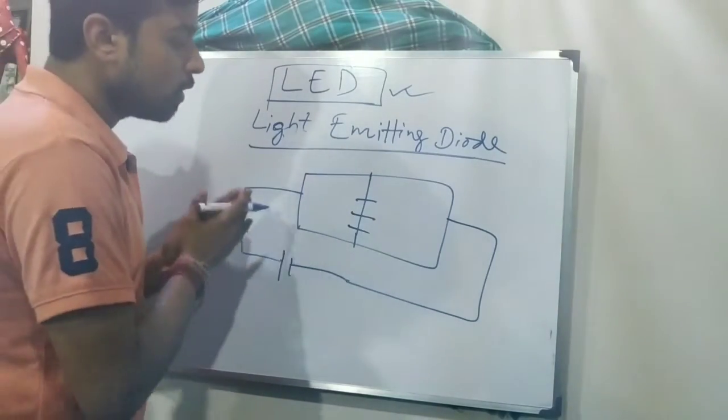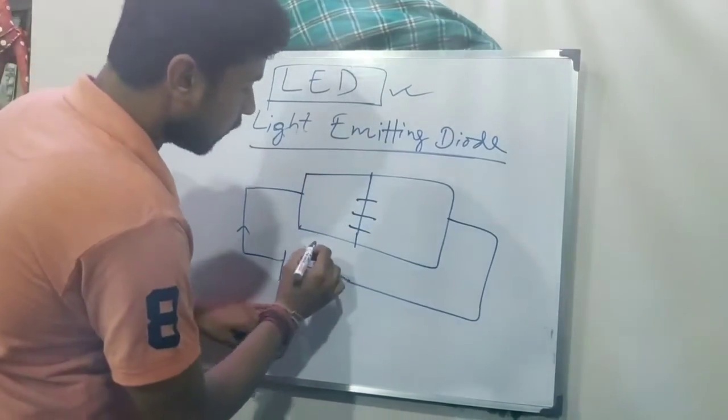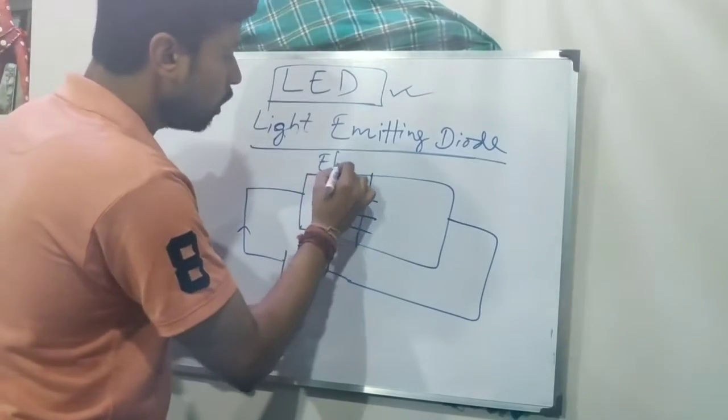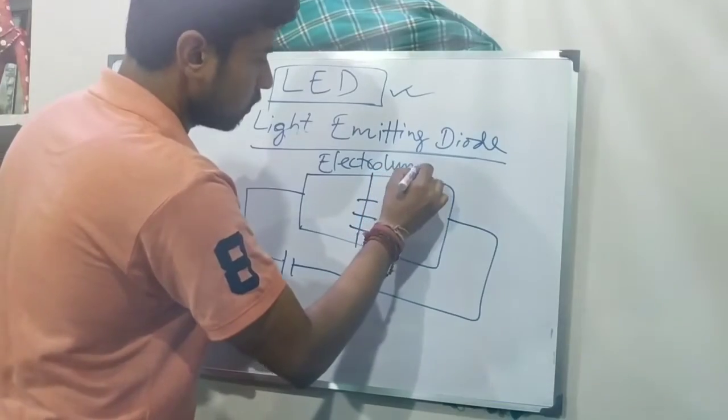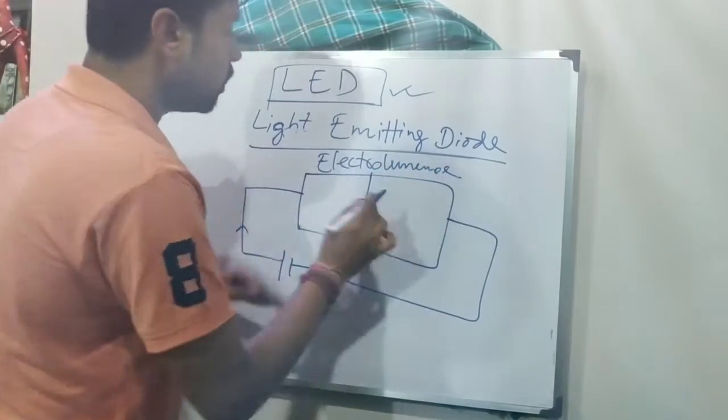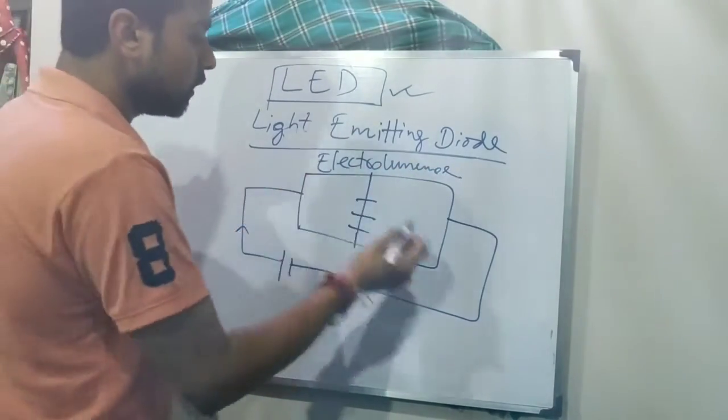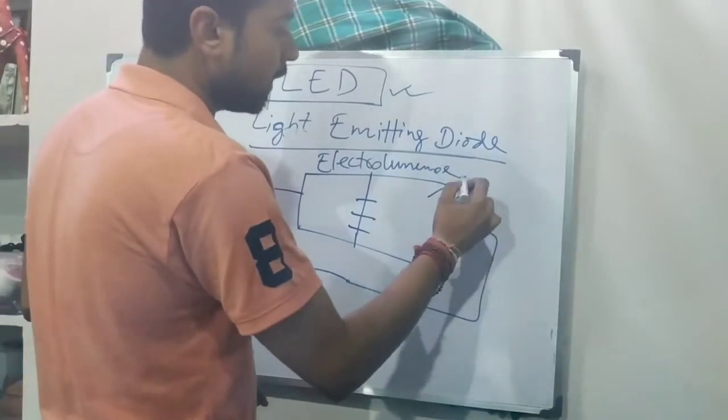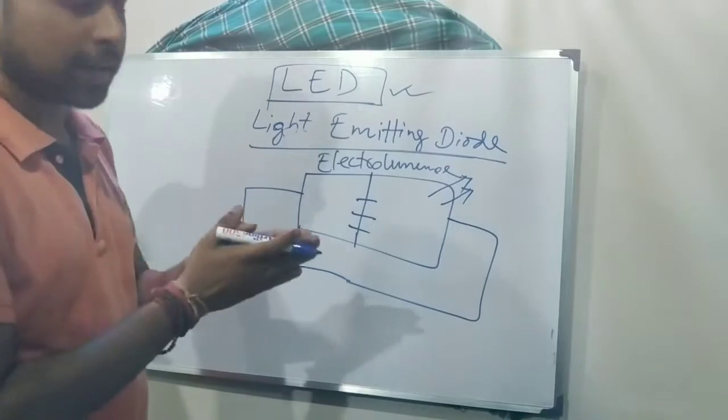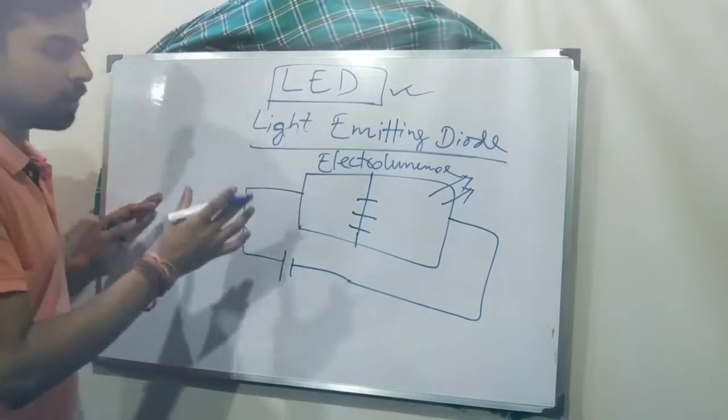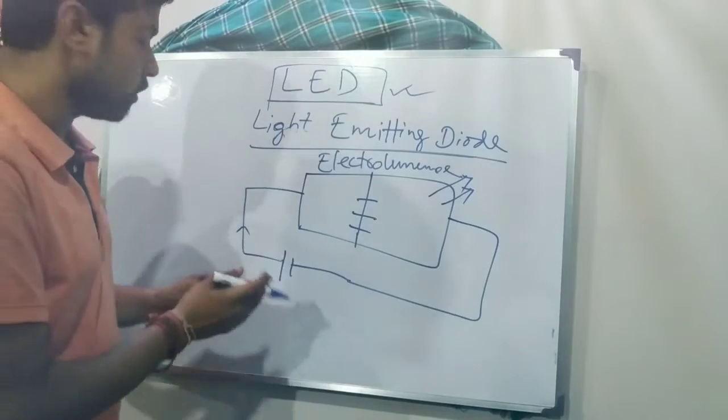And the moment we provide a voltage, so here a process that is known as electroluminescence. Using this process, this actually is capable of emitting light. So that's what simply happens. Now there are several factors which we must understand as far as the working of LED is concerned.